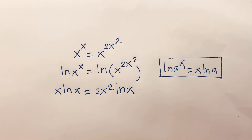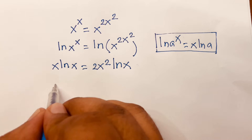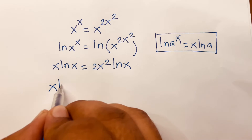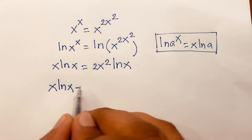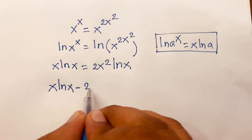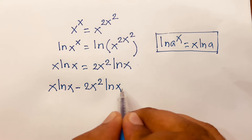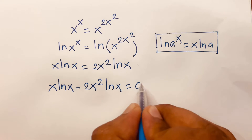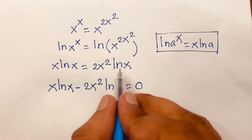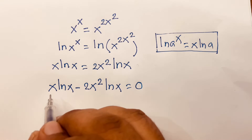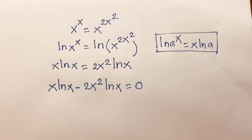I can say x·ln(x) minus 2x²·ln(x) is equal to 0. I just move this term to the left side, where we find a minus sign.